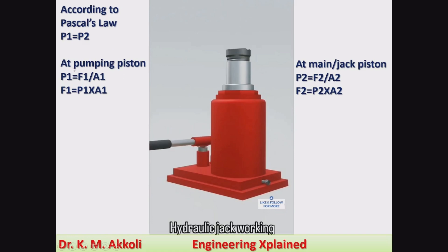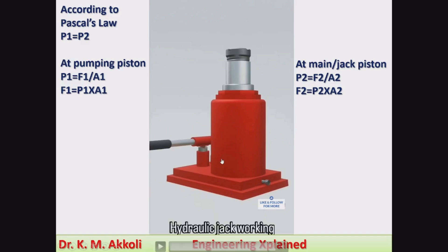Applying Pascal's law at the pumping piston, pressure P1 is equal to force per area, that is F1 divided by A1, where F1 is the force applied by the lever on the pumping piston and A1 is the area of the pumping piston. Therefore, the force at the pumping piston is F1 equal to P1 times A1, where A1 is smaller, so a smaller force is applied at the pumping piston.